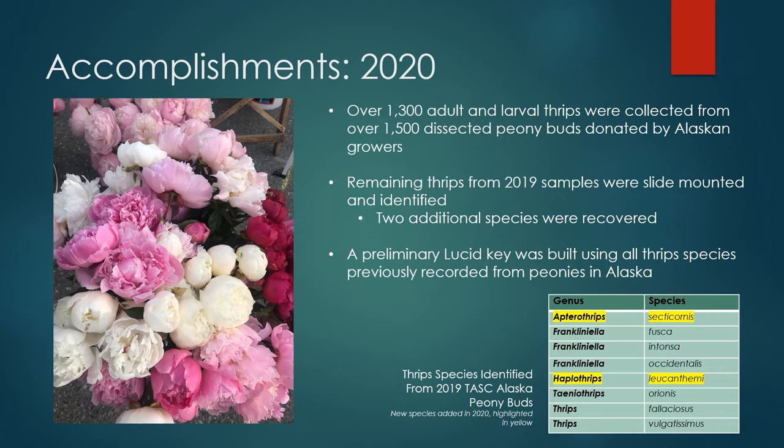A second type of identification key — a lucid key — was started in 2020 using all of the thrips species previously known from peonies in Alaska. This key has several advantages over traditional dichotomous keys, including the ability of the user to follow a non-linear path by picking and choosing which morphological characters to observe. How lucid keys are built also makes it much easier to add new species to the key, should additional thrips species be discovered from Alaska-grown peonies in the future.